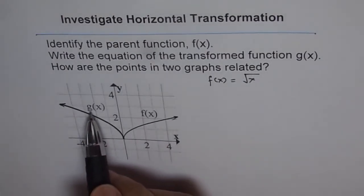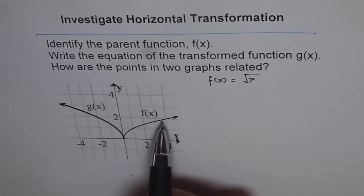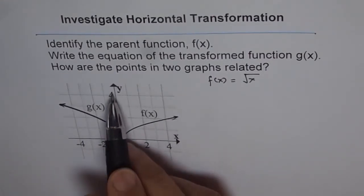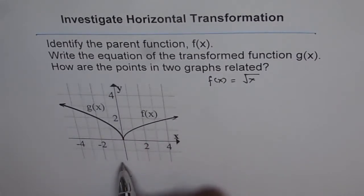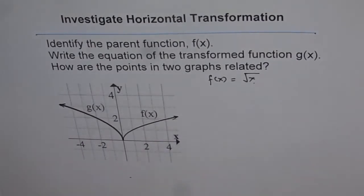One, g of x is a reflection of f of x. It is facing the other side, as if there was a mirror along y-axis. So there is indeed a horizontal reflection. So horizontal reflection will affect the inside term, and will make it negative. So that is the first transformation which you know.